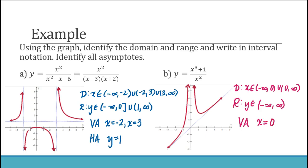There is no horizontal asymptote; instead there is a slant asymptote. A slant asymptote is of the form y equals mx plus b. This linear function has a y-intercept of 0, and going up 1 over 1 gives a slope of 1, so the slant asymptote is y equals x.